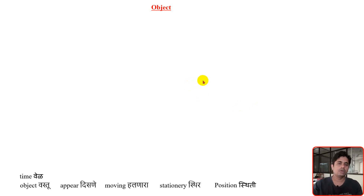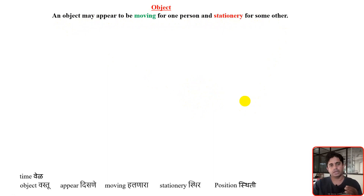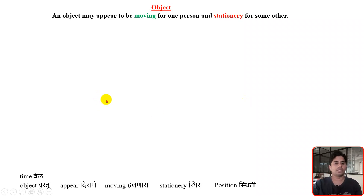Hello everyone. In this video we will discuss about object — what is an object? An object may appear to be moving for one person and stationary for some other person. There is one object; I feel it is moving, but a different person sees the same object and feels it is stationary. The object is the same, but the perspective of looking towards the object is different for different persons.